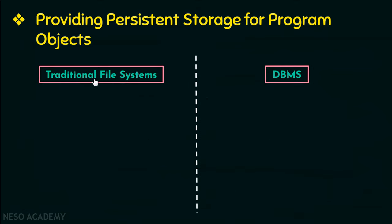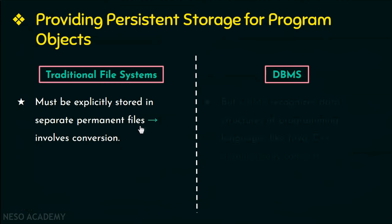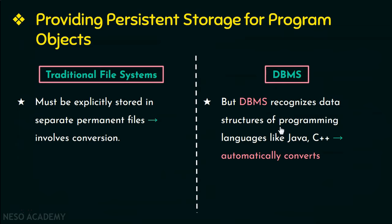In the traditional approach, objects erased when the program terminates can be stored explicitly in separate files, but this involves conversion to a format suitable for file storage. In the DBMS approach, it recognizes programming languages and automatically converts. Objects in C++ or Java can be stored permanently in an object-oriented DBMS. Such objects are persistent since they are not erased when the program terminates.